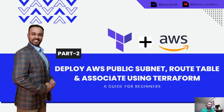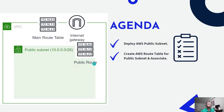If you are new to my channel and not yet subscribed, please go ahead and subscribe. The agenda for today's video is to deploy AWS public subnets, create a custom route table, and associate that route table to the public subnet.